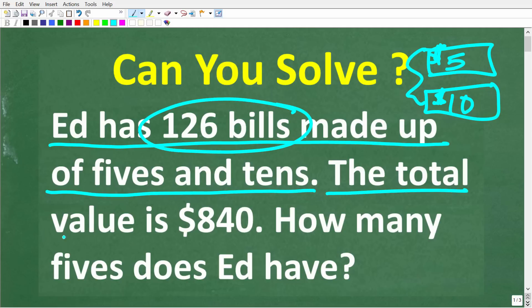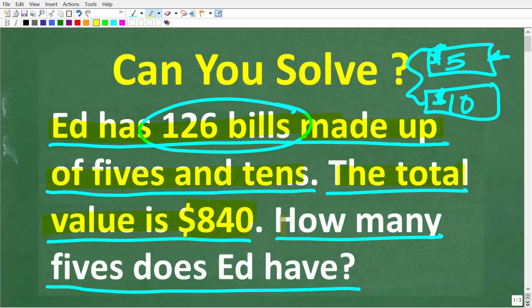Of course, we're talking about U.S. currency here, so we have some $5 bills and some $10 bills. But in total, he has 126 bills. Now, the total value of all these bills is $840. Okay, so the question is, how many fives does Ed have?